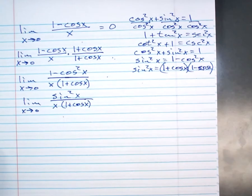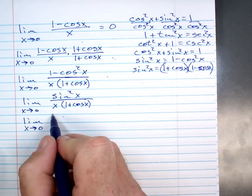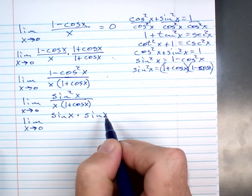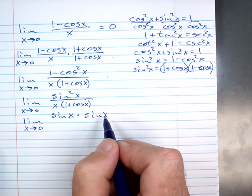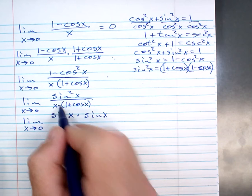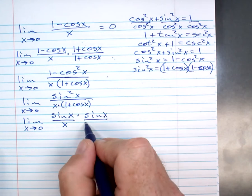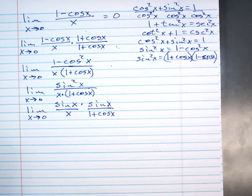Sine squared x over x times 1 plus the cosine of x. Now, people out there are going, well, how does that help? Well, I can break it as two separate functions. I could break this as the sine of x times the sine of x, right? Everybody agree? That's what sine squared x means? The sine of x times the sine of x? And this is a times, would you agree with that? Over x times 1 plus the cosine of x.